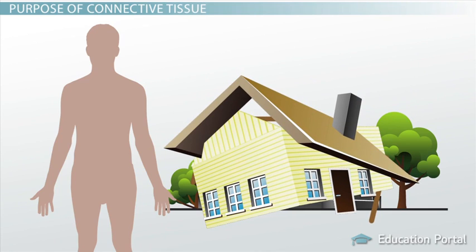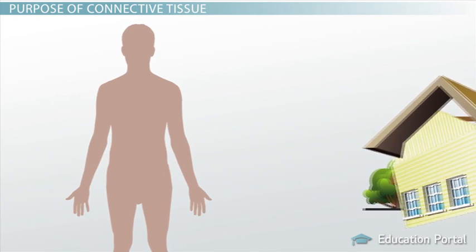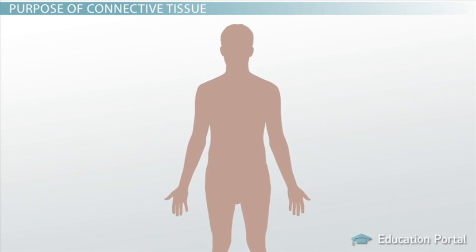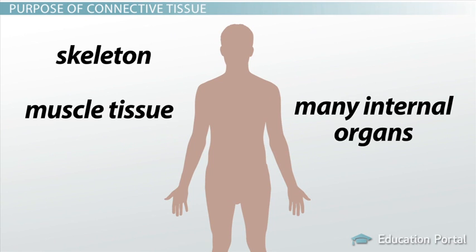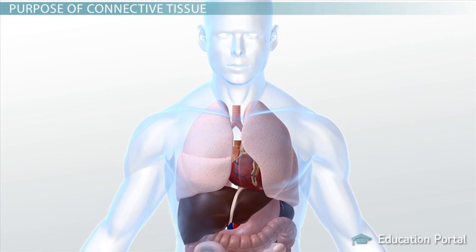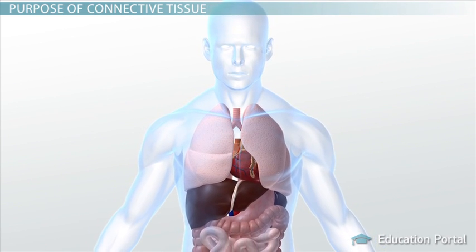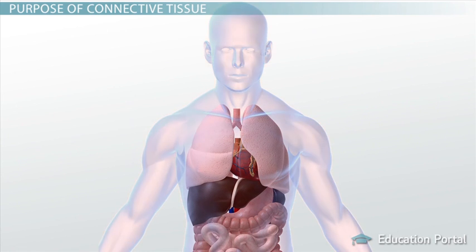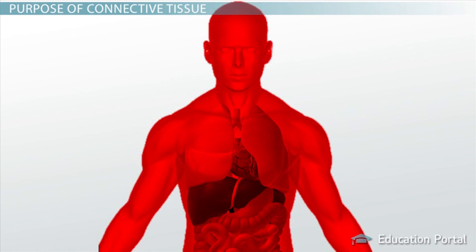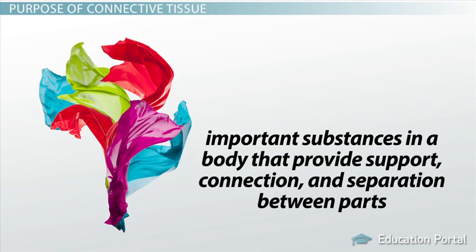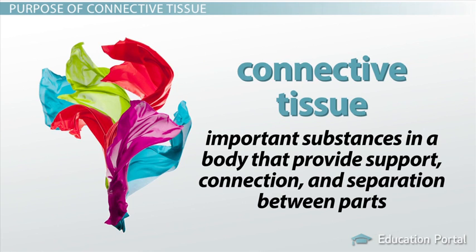We can think of a body in a similar fashion. A body is a structure that is composed of many different parts — a skeleton, muscle tissue, many internal organs, and skin covering it all. But are these body parts simply floating loosely within a body, balanced on top of one another? The answer is certainly no. All of these components are bound together in a tight package, with all parts connecting to something else. In this lesson, we will learn about the important substances in a body that provide support, connection, and separation between parts. This group of tissues is known as connective tissue.